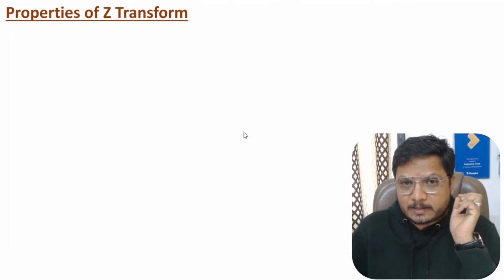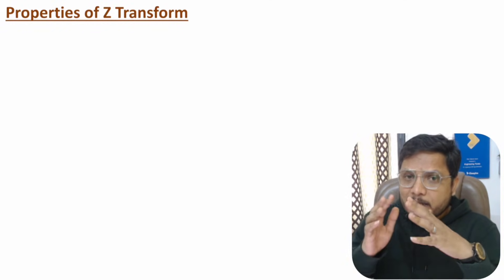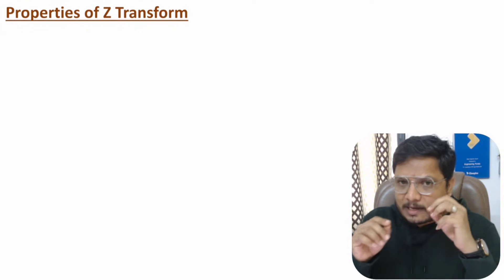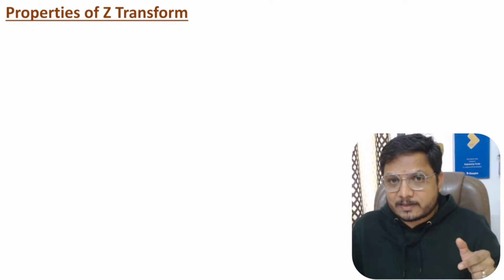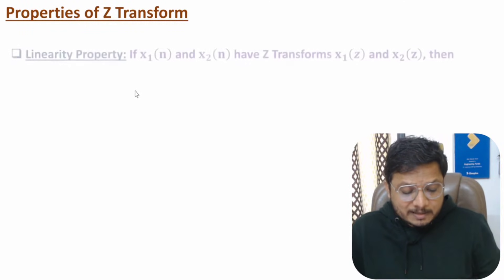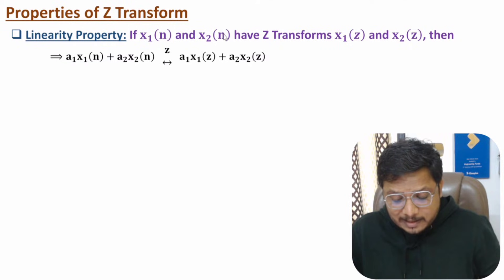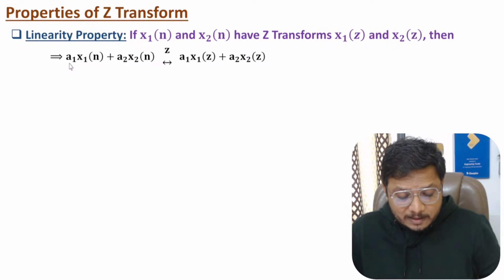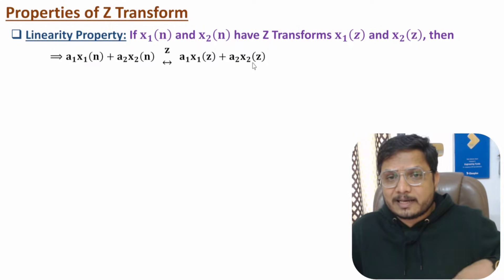Now I will discuss properties of Z-transform — proofs of these properties will be explained in future coming videos. The first property is linearity: if you have two discrete signals x1(n) and x2(n) with Z-transforms X1(z) and X2(z), then the Z-transform of a1*x1(n) + a2*x2(n) is a1*X1(z) + a2*X2(z).